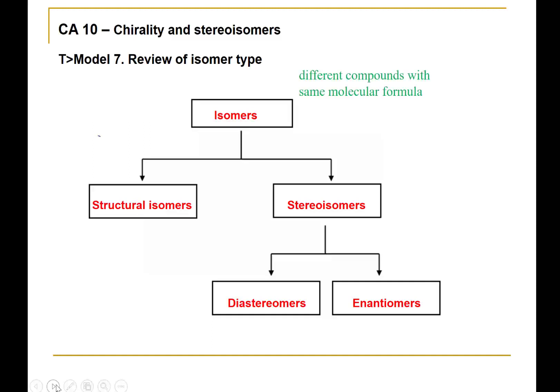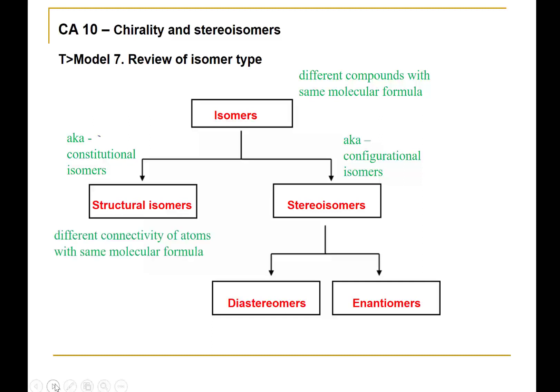Now let's add the descriptors. Isomers are different compounds that have the same molecular formula. Structural isomers — also known as constitutional isomers — have a different connectivity of atoms, and therefore will have a different name outside of any indication of stereoisomerism.